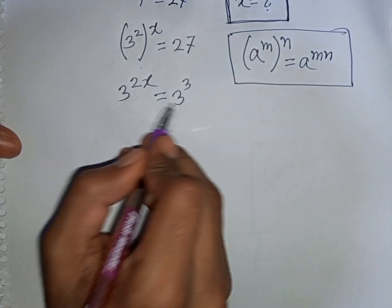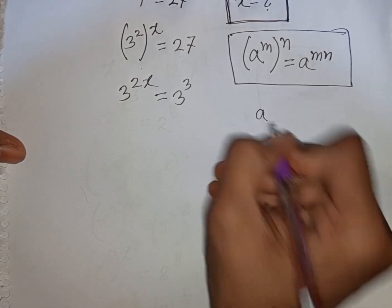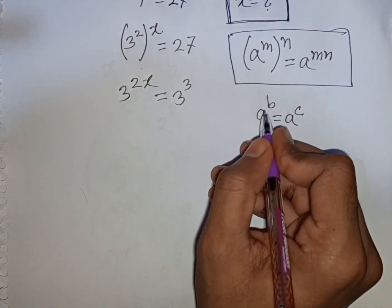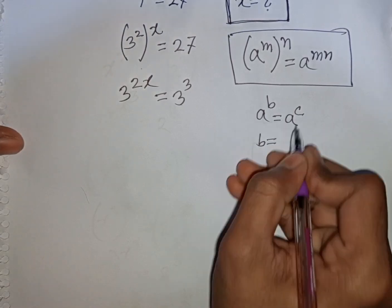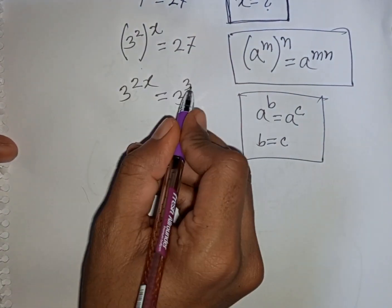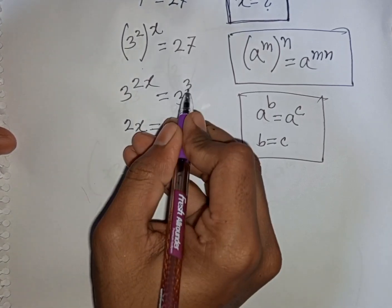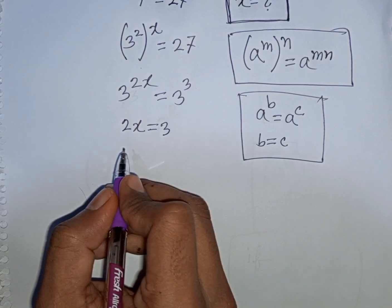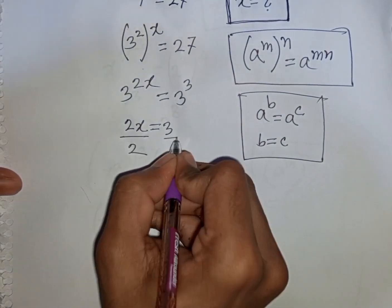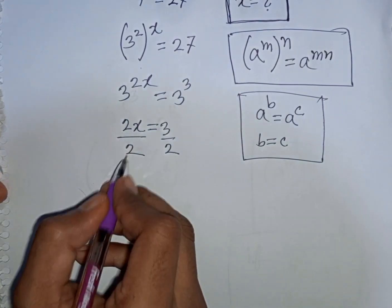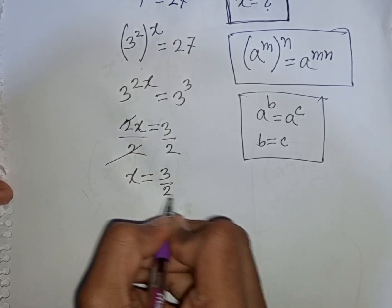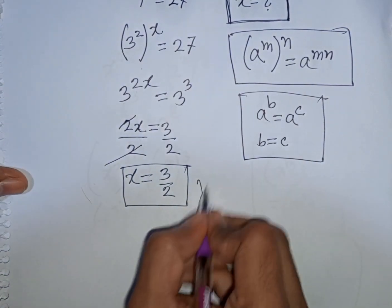We see 3 is the same base. Using the exponential rule that a power b equals a power c means b equals c — since the bases are equal, the powers must be equal. So 2x will be equal to 3. We divide by 2 on both sides, and this 2 cancels, so x will be equal to 3 by 2. This is our final answer.